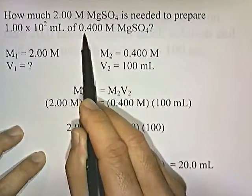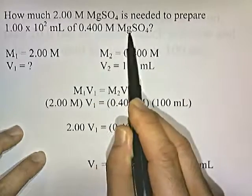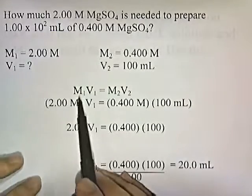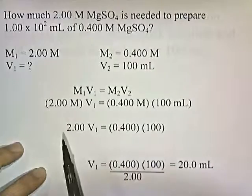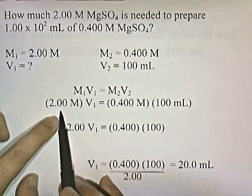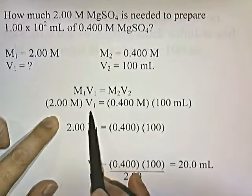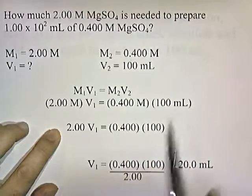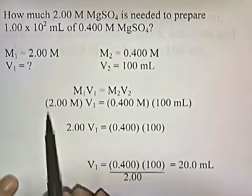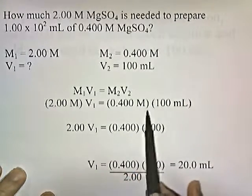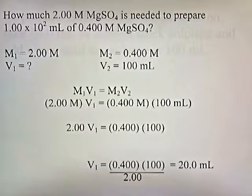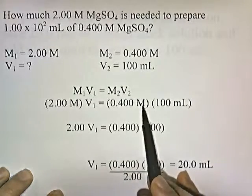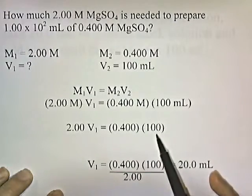0.4 molar magnesium sulfate is the molarity of the diluted solution after we've added water, so M2 is 0.4 molar. Here's our formula, and we substitute the values in: M1 is 2, V1 is unknown, M2 is 0.4, and V2 is 100. I'm going to rewrite this without the units — so instead of 2 molar I write 2, instead of 0.4 molar I write 0.4, and instead of 100 milliliters I write 100 — because it's easier to solve without a lot of unit letters.